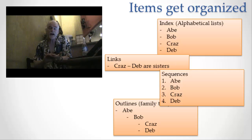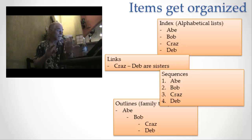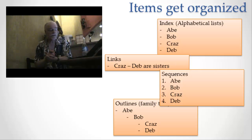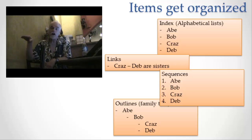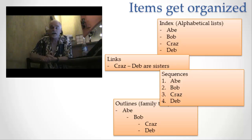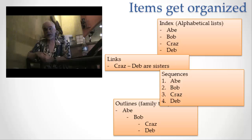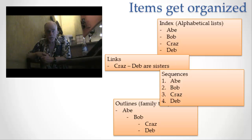Information items can also be organized by hierarchies or outlines — that's the fourth method. A family tree, for example, is an outline. In the example here, Abe is the granddad, Bob is the dad, and Kraz and Deb are the kids. Each one is a child one level down from the other. Like a table of contents of a book, this organizes things by outline or hierarchy.